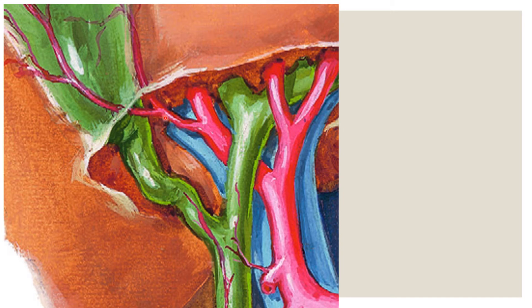What is the clinical importance of Calot's Triangle? It is very important for the surgeon before putting the ligatures to the pedicles of the gallbladder. Before you are going to remove the gallbladder — the surgery called cholecystectomy — you have to find out the cystic artery and ligate it properly. The cystic artery is present in Calot's Triangle. Behind this cystic artery we can identify the portal vein present here.